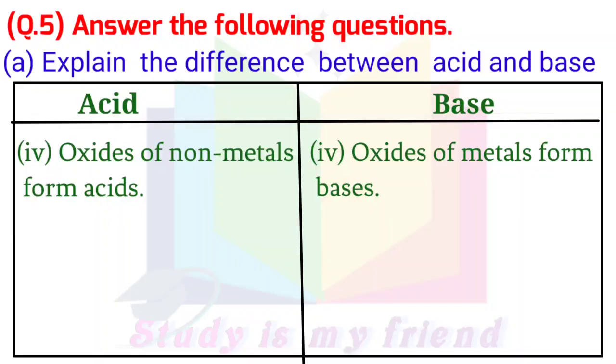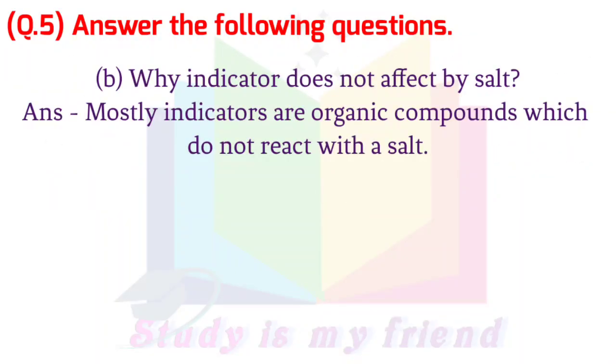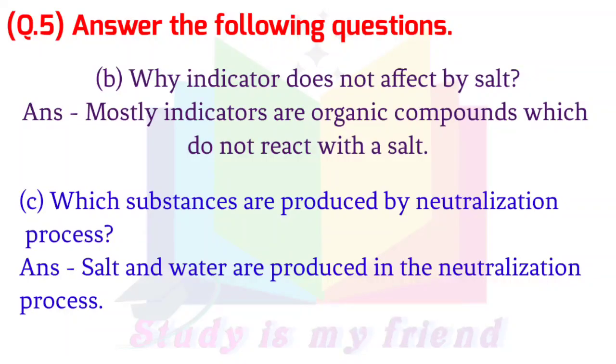B. Why indicator does not affect by salt? Answer: Mostly indicators are organic compounds which do not react with a salt. C. Which substances are produced by neutralization process? Answer: Salt and water are produced in the neutralization process.